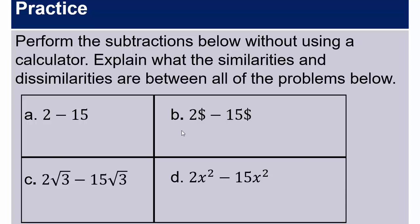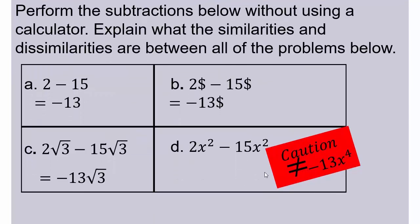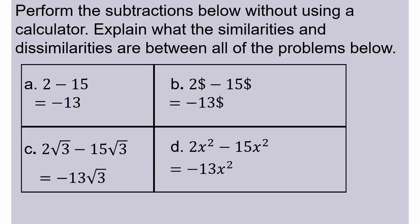2 minus 15 gives negative 13. $2 minus $15 means you are in debt — negative $13. 2√3 minus 15√3 gives negative 13√3. And 2x² minus 15x² — remember the caution — does not become x⁴; you are subtracting like units so it remains negative 13x². We discussed why adding x² and x² doesn't give x⁴, and the same principle applies here: negative 15 is the additive inverse of 15, so they behave similarly.